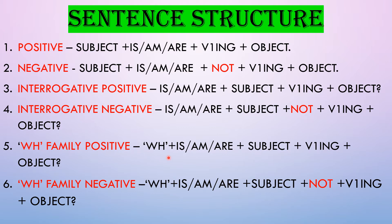For a WH family positive question: the WH word comes first, then the helping verb, then the subject, then the first form of verb with -ing (present participle), and then the object. For a WH family negative question: WH word + helping verb + subject + not + first form of verb with -ing + object.